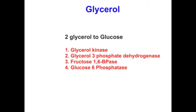Once you get two dihydroxyacetone phosphate molecules, they can feed into fructose-1,6-bisphosphate, which is then converted to fructose-6-phosphate by fructose-1,6-bisphosphatase, and finally glucose-6-phosphatase produces glucose. So the four important enzymes for glycerol are: glycerol kinase, glycerol-3-phosphate dehydrogenase, fructose-1,6-bisphosphatase, and glucose-6-phosphatase.